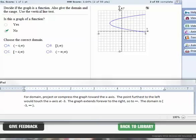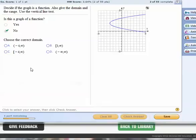For the domain, project or compress the graph toward the x-axis. So the point furthest to the left, if it's projected down, would touch the x-axis at, looks like, negative 4, and then it extends forever to the right, so to infinity. So for our domain, it would go from negative 4 on the left to infinity on the right. We'll choose the one with the square brackets since the point negative 4 is included.